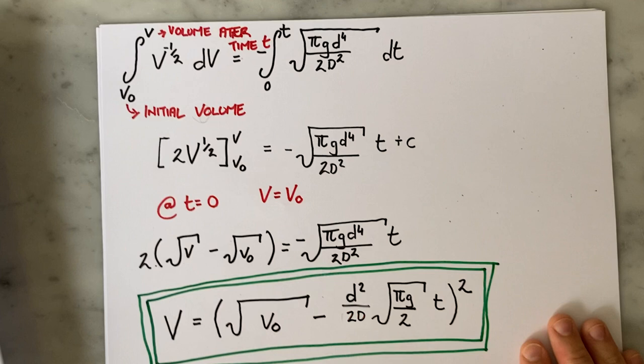If we clear our heads a little bit of all the maths we did and take a step back, this expression tells us that in order to know the volume of liquid left in the tank after a certain amount of time, I need to know the volume right at the start, the amount of time that has passed, the diameter of the drain hole, and the diameter of the tank. That's it. Any volume I calculate can also easily be converted into a height by dividing it by the cross-sectional area of the tank.